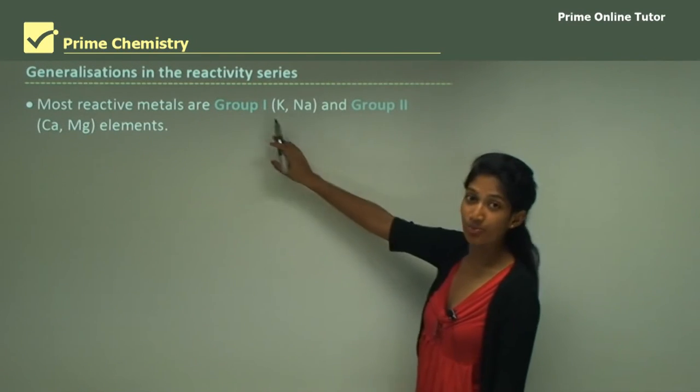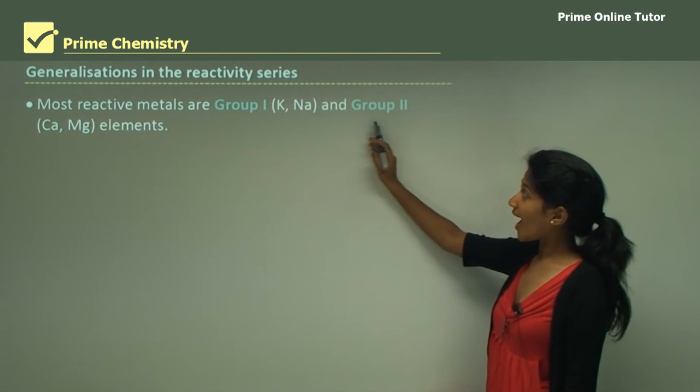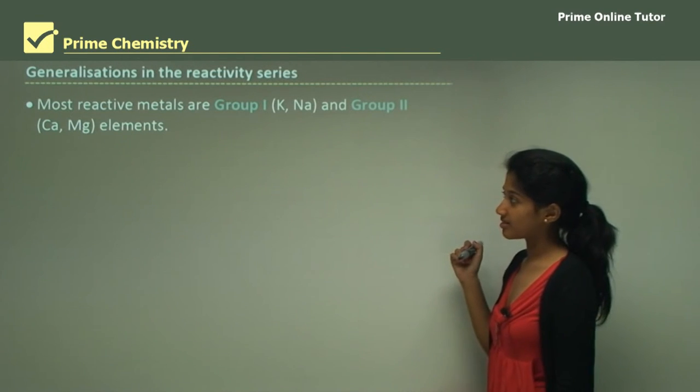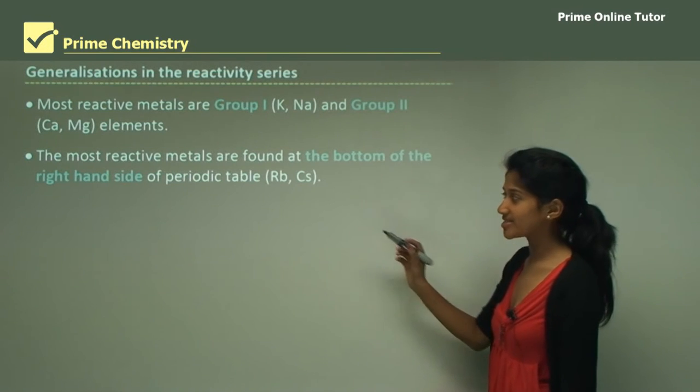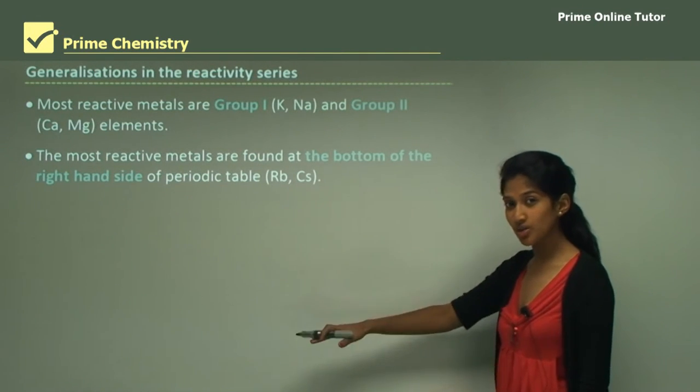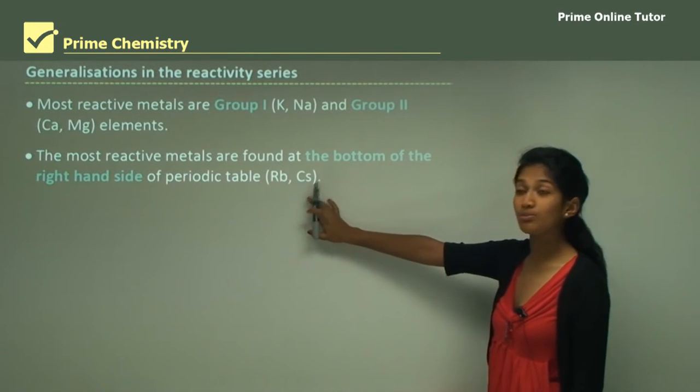Most reactive metals are group 1, in other words potassium and sodium, and group 2 such as calcium and magnesium elements. The most reactive metals are found in the bottom of the right hand side. If you move to your right hand side towards the bottom you would find rubidium and cesium there and these are the most reactive.